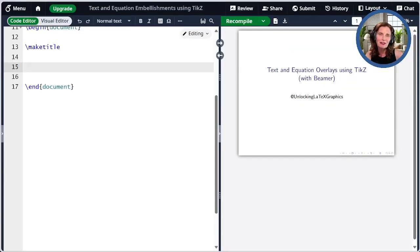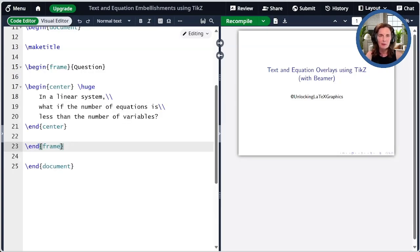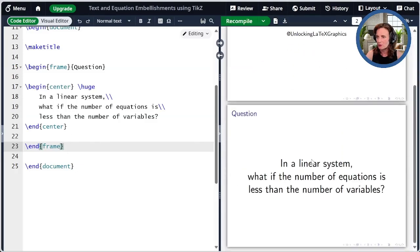We're going to show how to embellish some text using TikZ. Let me paste some example code over here. It's going to create a Beamer frame with some text and we'll use that as a starting point. So here's the frame we just created. Now suppose I want to embellish the text 'number of equations'. My first step is to turn that bit of text into a TikZ node. If you don't already know about nodes, I'll link to that episode in the show notes.